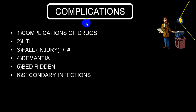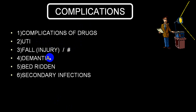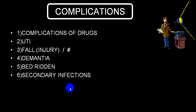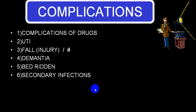Complications include drug-induced complications, recurrent UTI, frequent falls, injuries and fractures, and dementia — one of the most important symptoms causing debility. Once reaching stage 4 and 5, there is a very high chance of secondary infections like respiratory tract infection and urinary tract infections.